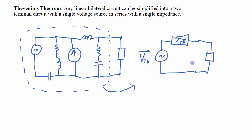One advantage of being able to do this with Thevenin's theorem is that if the load changes — if I had done an analysis on the whole circuit to figure out the voltage across the load and that load changes, then everything changes in the circuit. However, if I have reduced it to its Thevenin equivalent, the nature of the voltage and current on that load will change, but I only have two elements connected to that load, so my new calculations are very easy to do.